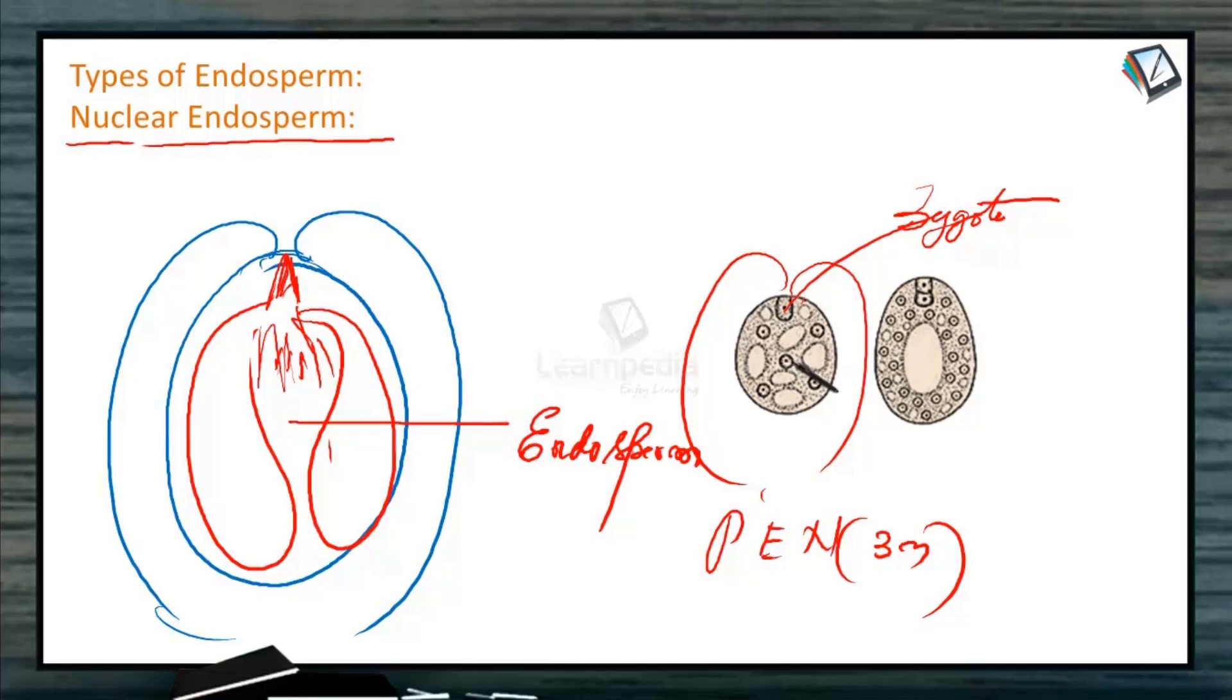The division of the nucleus is not followed by division of cytoplasm. That means karyokinesis is not followed by cytokinesis. So as a result, the nuclei go on multiplying. This is by mitotic division only. But the cytoplasm is not divided, resulting in an endosperm full of nuclei.